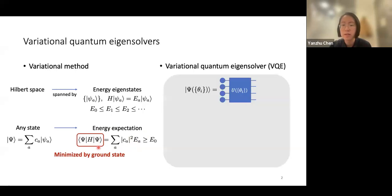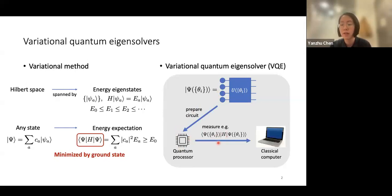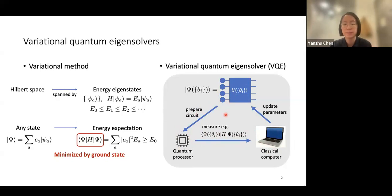The guess wave function, or ansatz, is given by a parametrized quantum circuit whose parameters translate to gate parameters. These circuits are prepared on a processor where we measure the energy expectation value or its gradient. Measured outcomes are fed to a classical computer, which provides updated variational parameters, and this cycle repeats until convergence.